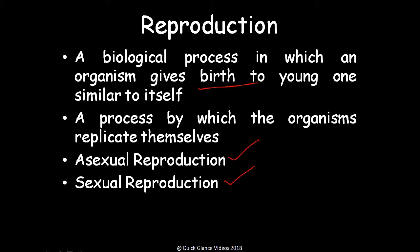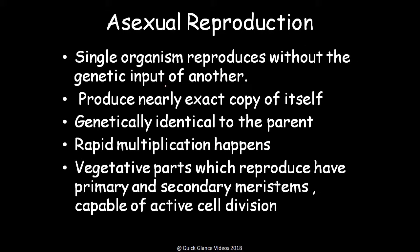We will be looking into asexual reproduction in plants. Asexual reproduction is done by a single organism that reproduces without the genetic input of another organism, producing a nearly exact copy of itself. The parent and offspring are exact copies sharing the same genetic identity. This is often done for rapid multiplication.